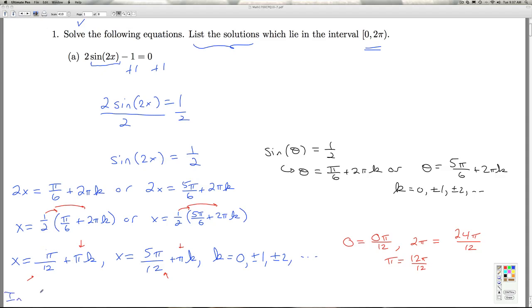Okay, so in the interval 0 to 2π, what am I going to get? Well, when k equals 0, I get π/12. That's certainly between 0π/12 and 24π/12. If I let k equals 1, I'm adding π, which is 12π/12. That gives me 13π/12.